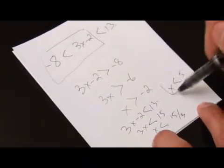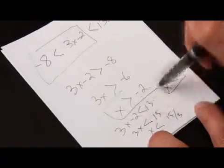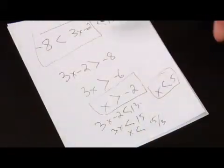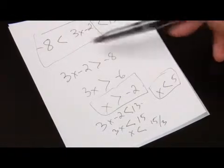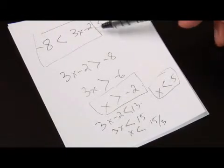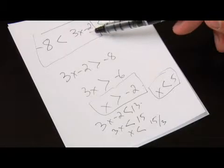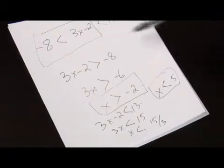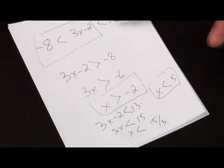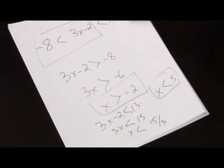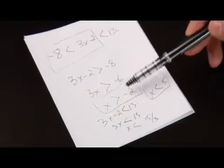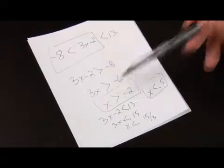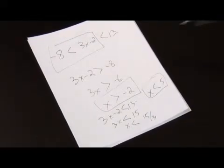From this inequality, x has to be greater than negative 2 for this to be true. At the same time, x has to be less than 5 for this equation to be true as well. So x has to fit both requirements of being greater than negative 2 and less than 5.